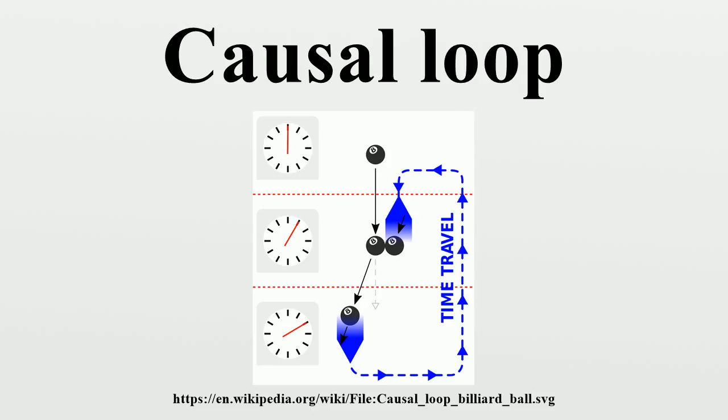Krasnikov writes that these bootstrap paradoxes, information or an object looping through time, are the same. The primary apparent paradox is a physical system evolving into a state in a way that is not governed by its laws.